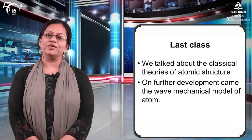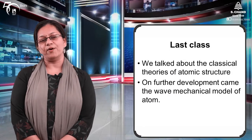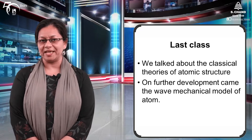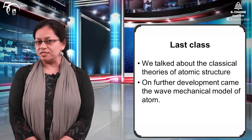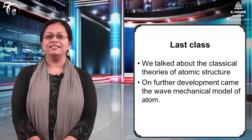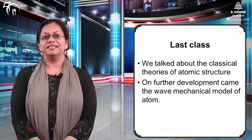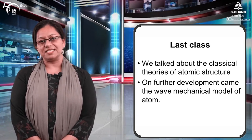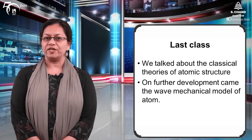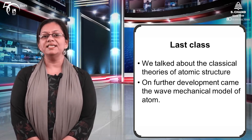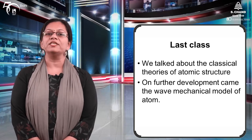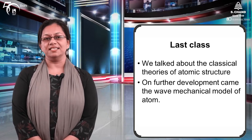In the last class, we talked about the classical theories — Bohr's model, Rutherford's model, de Broglie's equation, and the Heisenberg's uncertainty principle. Tab tak hamei pata chal gaya tha ki jo hamara electron hai, it is not just a particle. It has dual character — it can behave both as a particle as well as a wave.